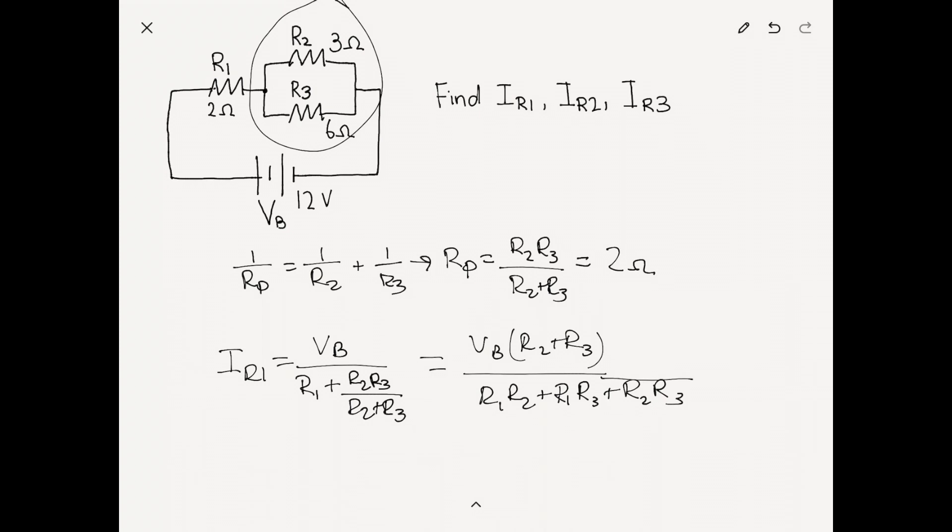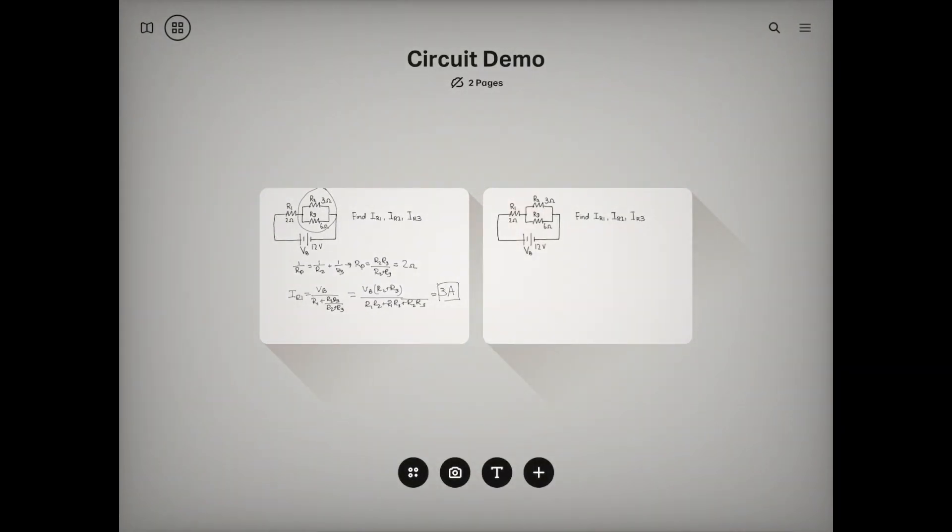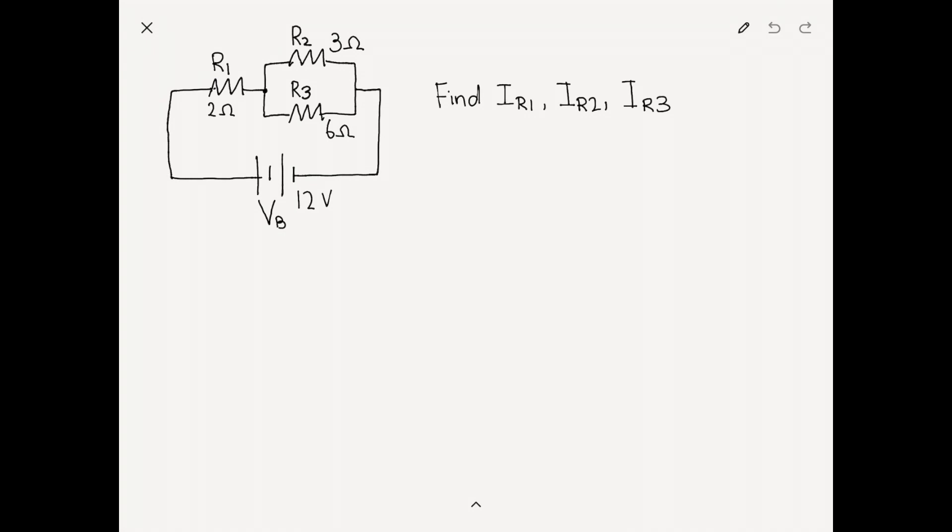We're one-third way through this problem, and now we're just looking for the current at R2 and R3. In order to solve for current at R2 and R3, we note that they're in a parallel structure, so the voltages across both branches are the same. We can express that as voltage R2 equals voltage R3.